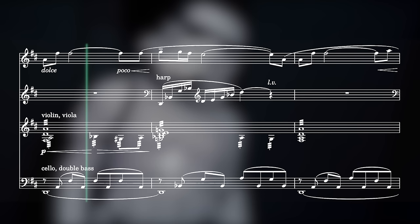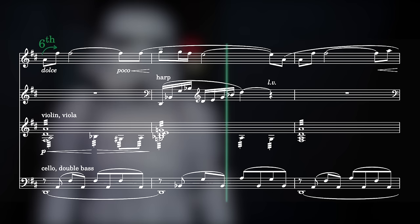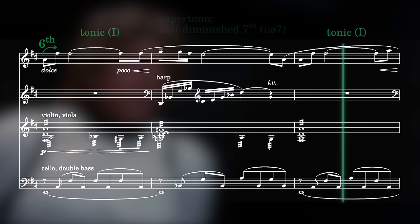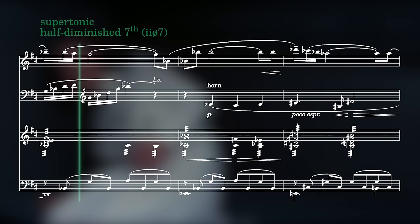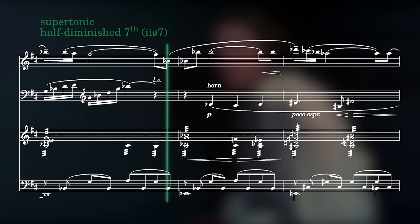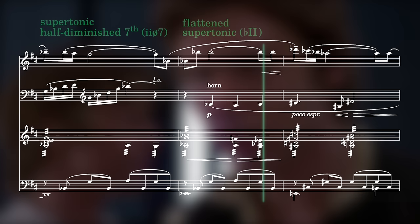The tune for this theme begins with a reaching major 6 interval, and the harmony sets up an oscillating pattern between the tonic, which is D major in this case, and a half diminished 7th chord based on the second degree of the scale, the supertonic. After moving back and forth between these two chords, the harmony moves to the flattened 2nd chord in the Phrygian mode, Eb Phrygian.